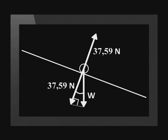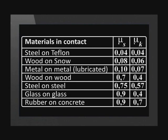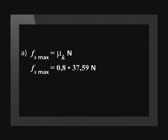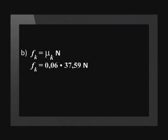And so is the normal force. The coefficient of friction between wood and snow is 0.08 for static friction and 0.06 for kinetic friction. We substitute values into the equations and find their answers. Maximum static friction equals 3 newtons. Kinetic friction equals 2.26 newtons.